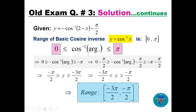After subtracting π/2: the upper bound becomes 0 − π/2 = −π/2 and the lower bound becomes −π − π/2 = −3π/2. So the range of the function is [−3π/2, −π/2].